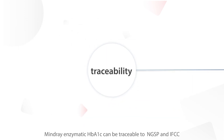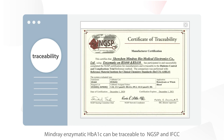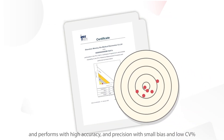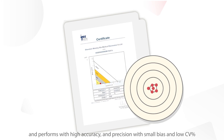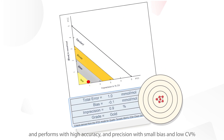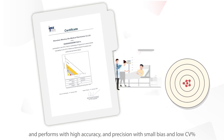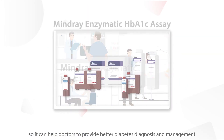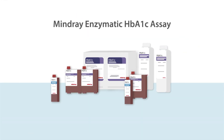Mindray enzymatic HbA1c can be traceable to NGSP and IFCC and performs with high accuracy and precision, with small bias and low coefficient of variation. This helps doctors provide better diabetes diagnosis and management.